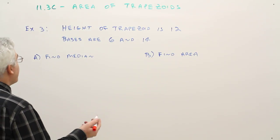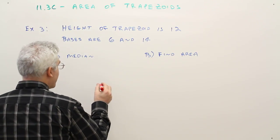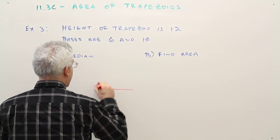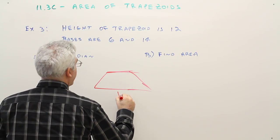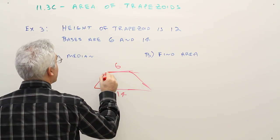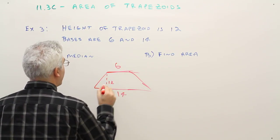So again, if you're a visual student, you can certainly draw a trapezoid. It does not have to be to scale. So, 14, 6, and that's 12.